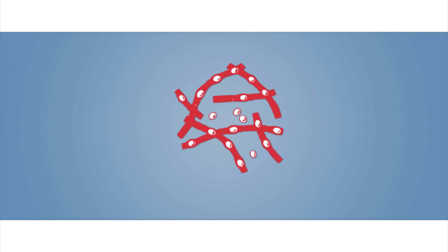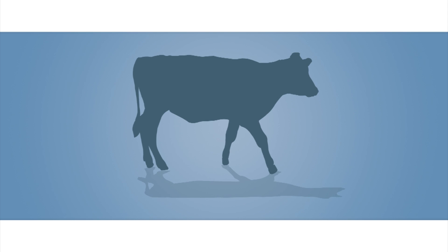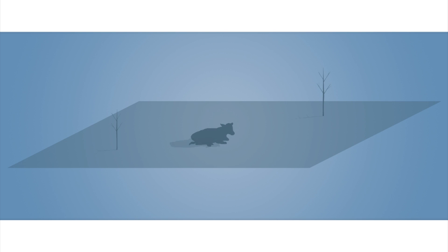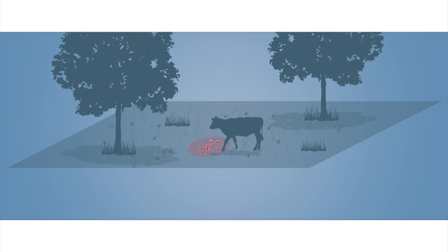Anthrax bacteria, for example, produce spores that persist in the environment for many years. Cases of anthrax can occur for decades in a contaminated pasture, affecting animals that have had no direct contact with an infected host.